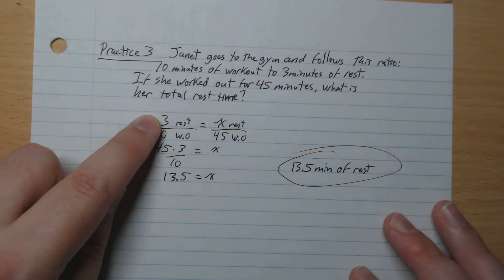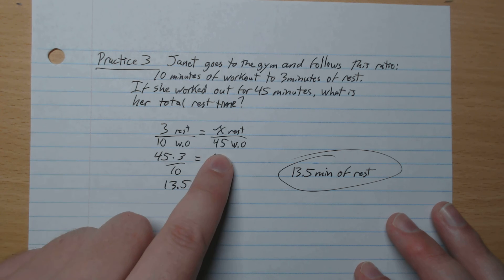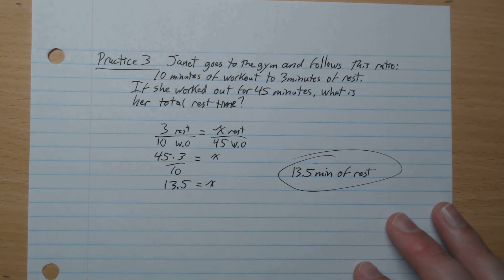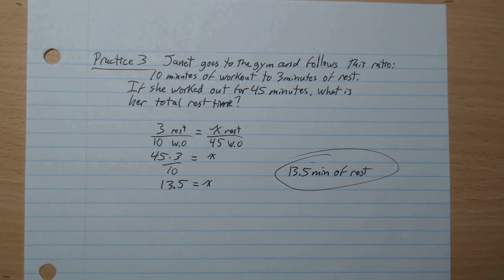Okay, so we have 3 minutes of rest to 10 minutes working out, unknown minutes of rest to 45 minutes of working out. Times 45 both sides, and so x is 13.5. So 13.5 minutes of rest. That's it, it's that easy. I'll see you guys in the next video.